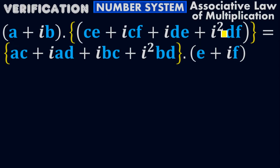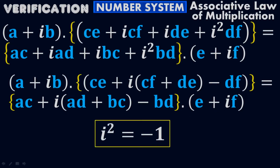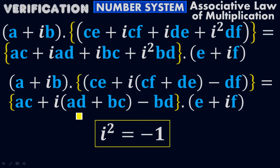Now plug in i² = −1 on both sides. On the left side: (A + iB)(CE + i(CF + DE) − DF). On the right side: (AC − BD + i(AD + BC))(E + iF). For the left side, i²DF becomes −DF. I take iota common from iCF + iDE to get i(CF + DE). Similarly on the right side, i²BD becomes −BD, and iota is taken common to give i(AD + BC).